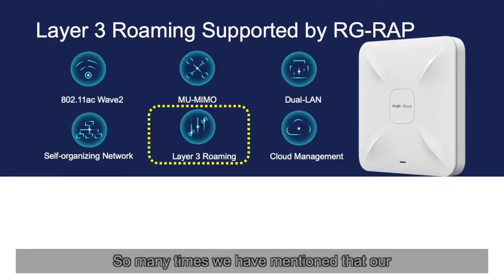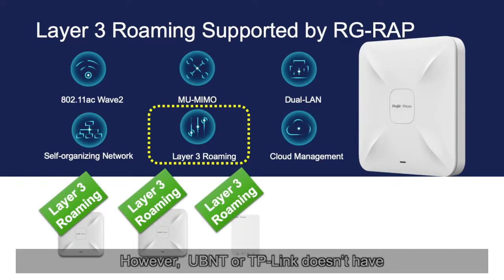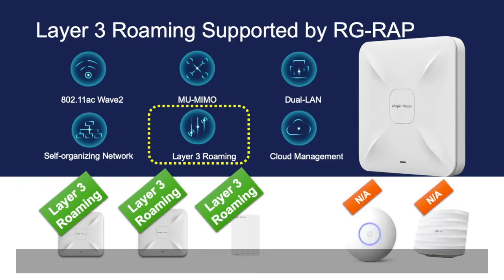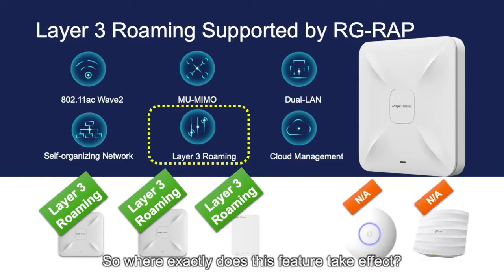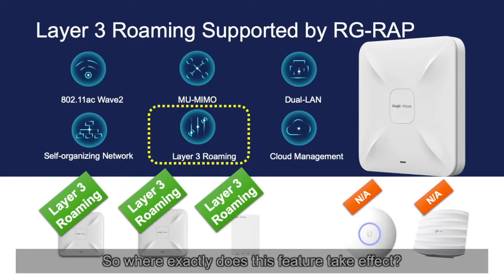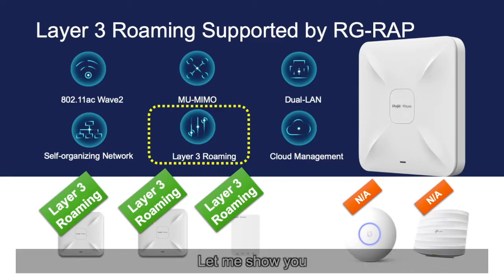Many times we have mentioned that our RAP series have layer 3 roaming features. However, Ubiquiti or TP-Link doesn't have this. So where exactly does this feature take effect, and what extra convenience does Rigid provide? Let me show you.